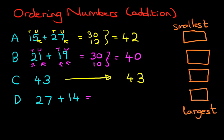And the last one we have is D. We've got 27 plus 14. Again, let's start with the tens. We've got two tens and one ten. That makes three tens, 30. Then we've got the units. 7 plus 4. 7 plus 4 is 11. 30 plus 11 is... Count the tens. 40. And then the units, one. 41.